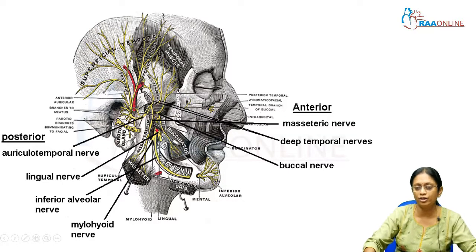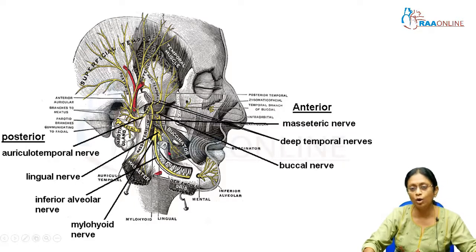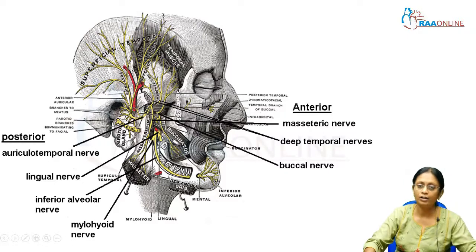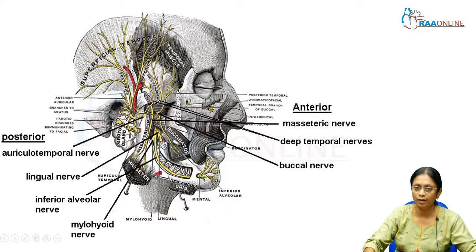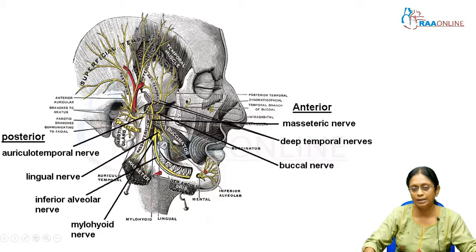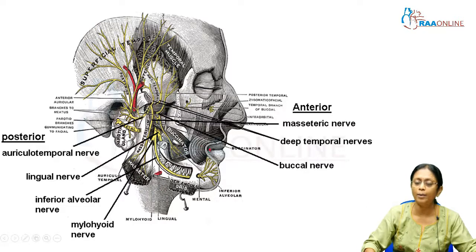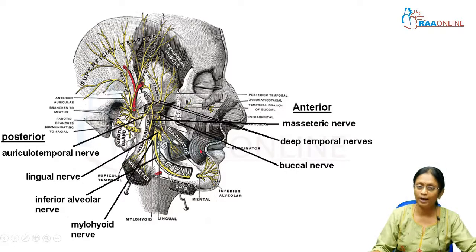When giving an injection at the inferior alveolar nerve foramen region, we also tend to anesthetize the lingual nerve. The lingual nerve runs very close to the lingual mucosa of the third or second molar in the mandible. So anesthetizing the inferior alveolar nerve also anesthetizes the lingual nerve, and partly the mylohyoid nerve. If the injection is at the foramen level, we are anesthetizing just the inferior alveolar nerve along with its mental and incisive branches, making the entire mandible on that side completely numb.